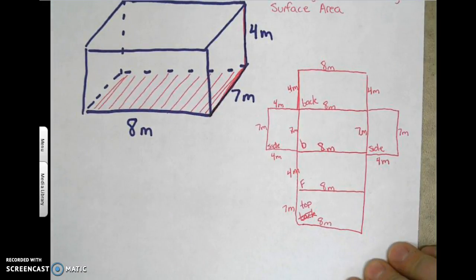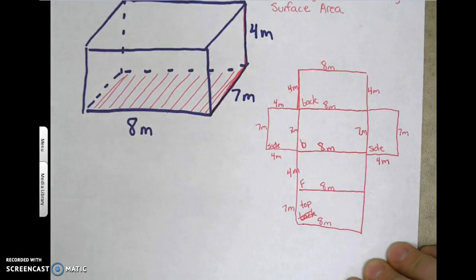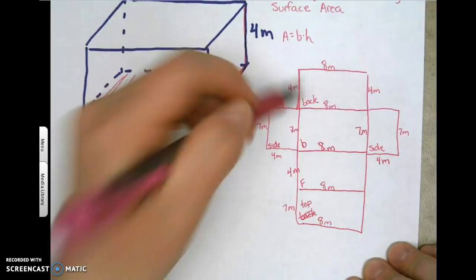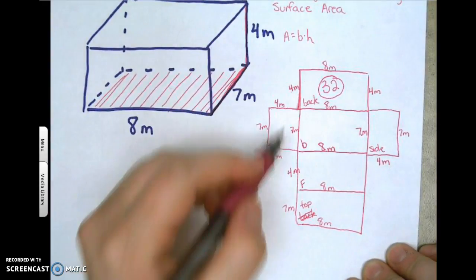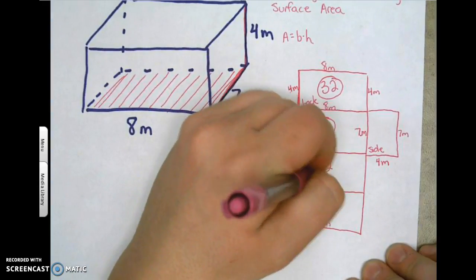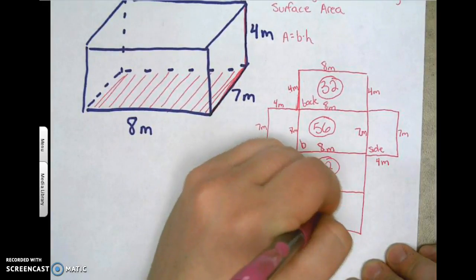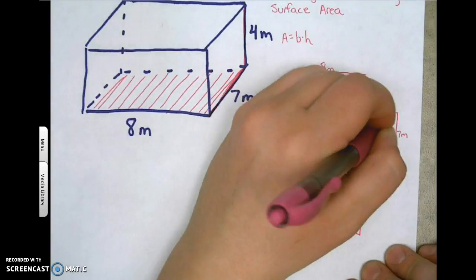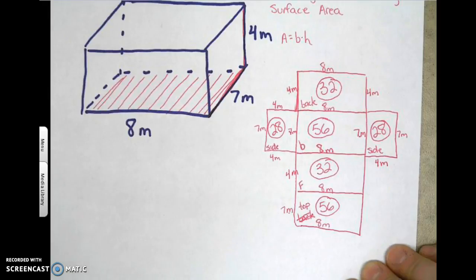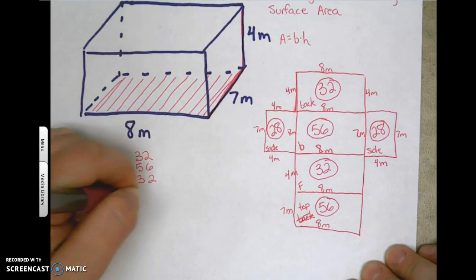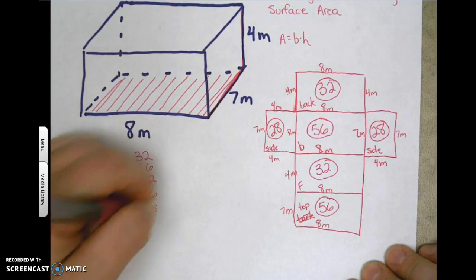Now that everything is labeled, find the surface area by calculating the area of each rectangle and adding them together. Area of a rectangle is base times height. The top is four times eight, which is 32. Seven times eight is 56. Four times eight is 32. Seven times eight is 56. The two side flaps are each seven times four, which is 28. So we add: 32 + 56 + 32 + 56 + 28 + 28.